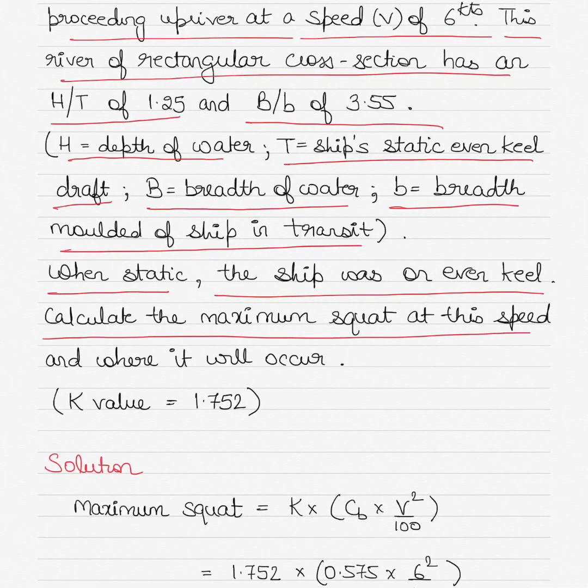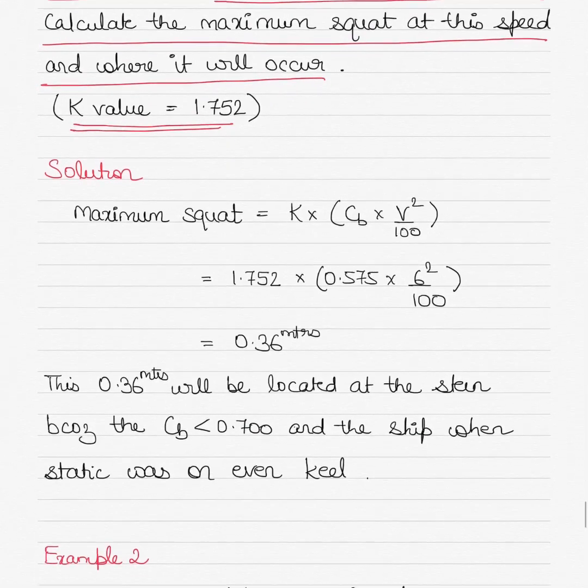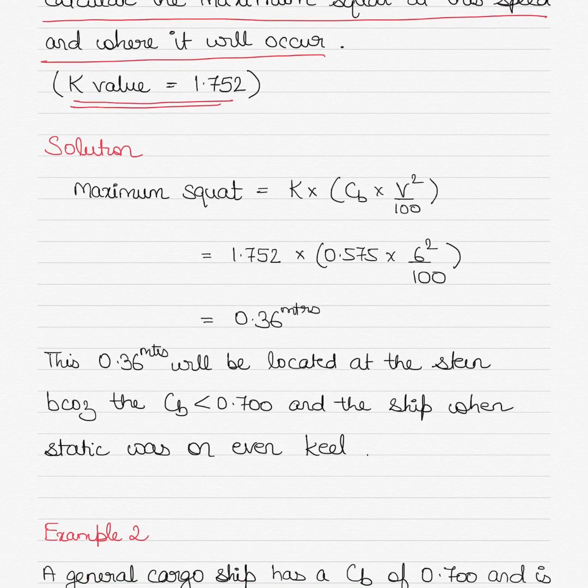Calculate the maximum squat at this speed and where it will occur, whether at the bow or stern, not the geographic location. The K value is given to us as 1.752. K is a constant and the value is given to us. The solution is the maximum squat formula: Maximum Squat = K × (Cb × V²/100), that is a constant multiplied by the block coefficient multiplied by the square of the velocity divided by 100.